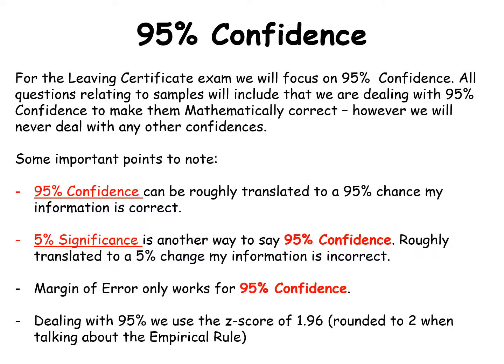As you go on and study statistics in more detail you'll see other things appear, but for the moment we're sticking to 95% confidence. Now these are not the mathematical definitions — this is just a way to help you grasp what's going on. 95% confidence can be roughly translated as a 95% chance my information is correct, and we then see 5% significance, meaning a 5% chance that my information is incorrect.